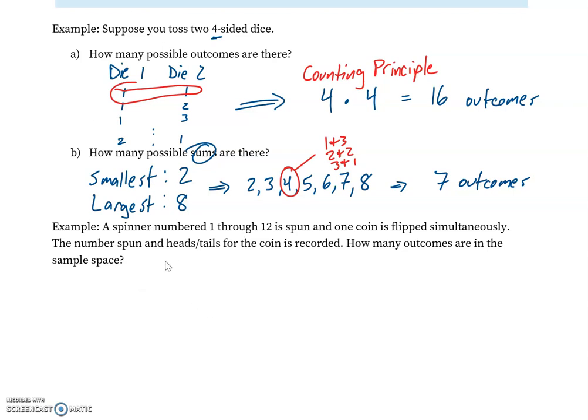So the number spun and heads or tails is recorded for the coin. So how many outcomes are in the sample space? Well, again, we can use that counting principle, and we can say, well, the first event has 12 possible outcomes, right? Spinning one through 12. And the second event is just heads or tails—two possible outcomes.